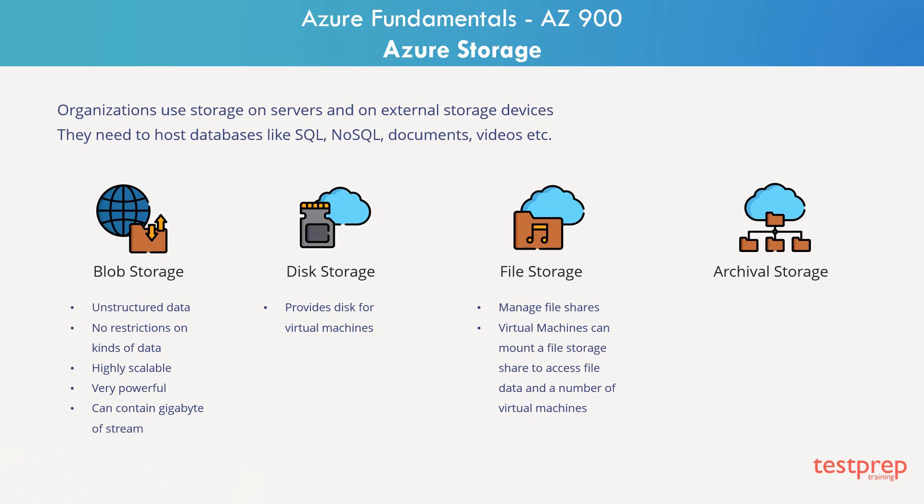File storage is used to manage file shares. These file shares are accessed using the SMB protocol. Azure file shares can be mounted concurrently by cloud or on-premise deployments of Windows, Linux, or even macOS applications running in Azure. Virtual machines can mount a file storage share to access file data, and a number of virtual machines can mount and access the file storage share simultaneously.